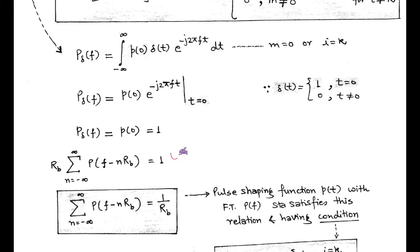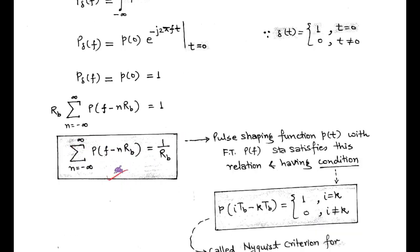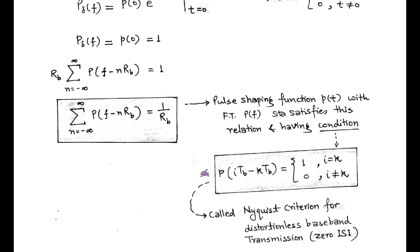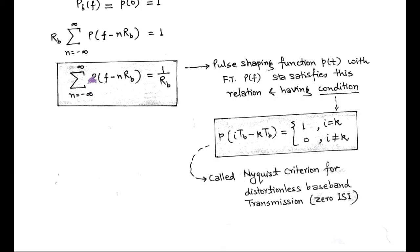In place of P_delta(f), we can write rb times summation of P(f minus n*rb), limit n equals minus infinity to plus infinity, as derived in terms of bit rate rb. From this, we derive the relation of the pulse shaping function p(t) satisfying the Nyquist criteria, having zero inter-symbol interference. This relation is: summation of P(f minus n*rb) equals 1/rb. The pulse shaping function p(t) has Fourier transform P(f) and satisfies this relation equal to 1/rb. This condition — p(i*Tb minus k*Tb) equals 1 for i equals k and 0 for i not equals k — is called the Nyquist criteria for distortionless baseband transmission having zero inter-symbol interference.